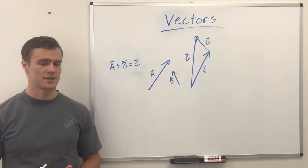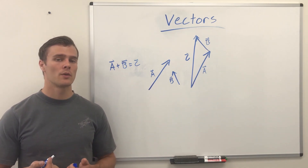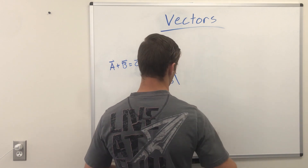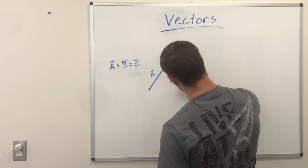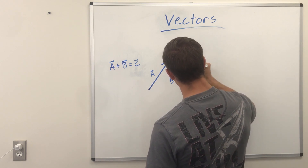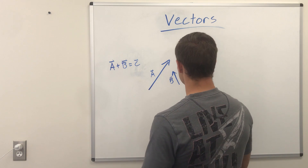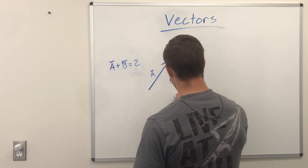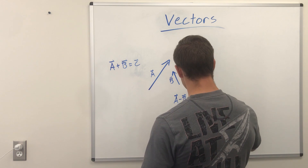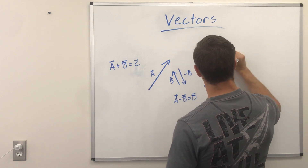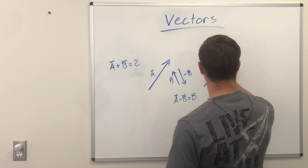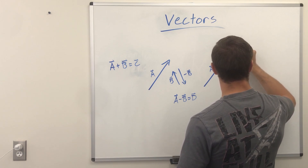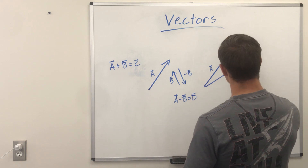Subtraction is very similar to addition, in that we just make the one we're subtracting negative. So say we want A minus B — we're just going to draw B going the opposite direction. It'll still have the same length, just going in the opposite direction. So to subtract them, we say A minus B equals vector D — draw A and a negative B, and we call the result D.